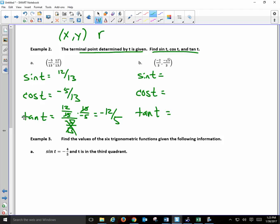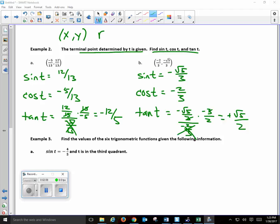OK, I have positive root of 5 over 2 for tangent, cosine is negative 2 over 3, and sine is negative root of 5 over 3. Everybody OK with that?